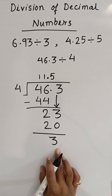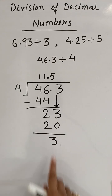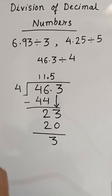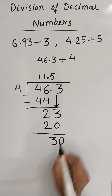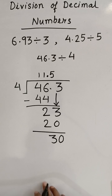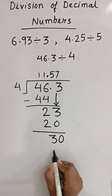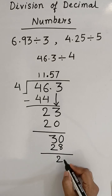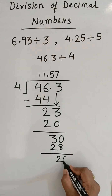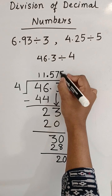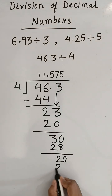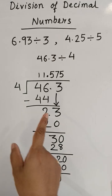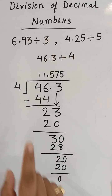Now 4 into how many times is near to 23? 4 into 5 is 20. We got a remainder of 3 — previously we got 0, but here we get 3. What you have to do: since you have put the decimal point, you can add a 0 with the remainder. Now 4 into 7 is 28, and again 2 is the remainder. Again add 0 because you have the decimal point. Now 4 into 5 is 20, remainder 0. So 46.3 divided by 4 is 11.575.